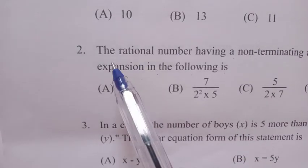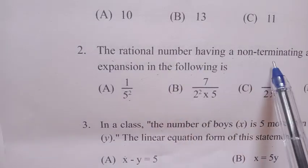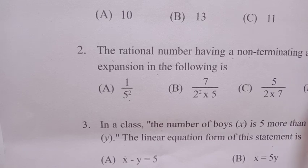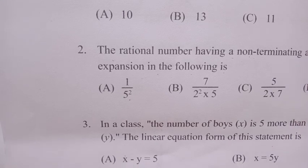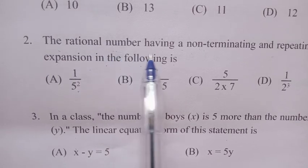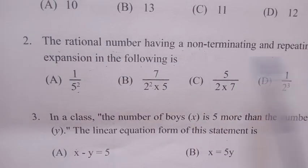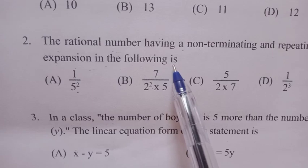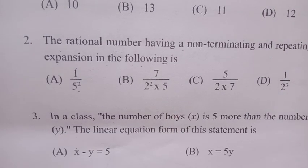The second question: the rational number having a non-terminating and repeating decimal expansion in the following is... This option is good. There are four options as you can see.